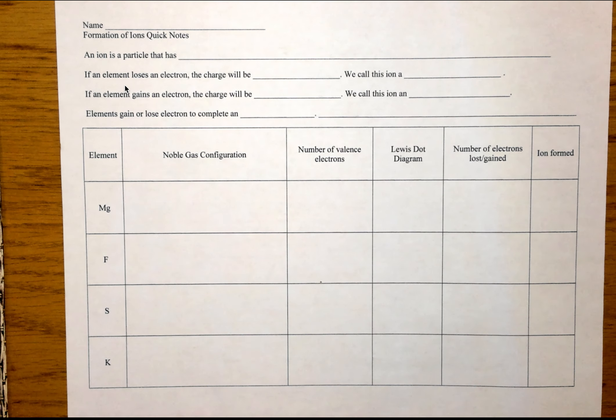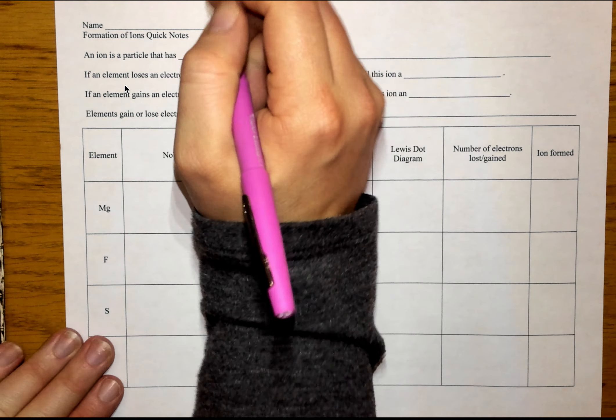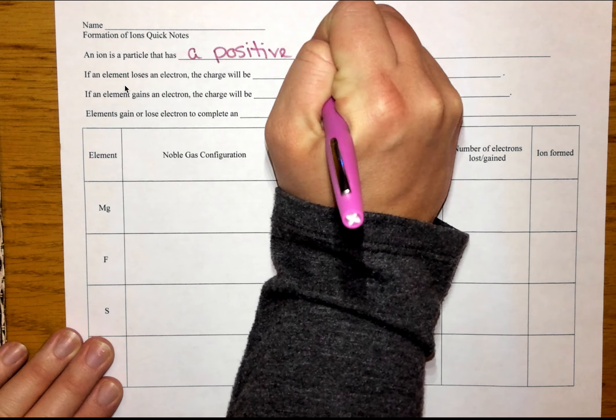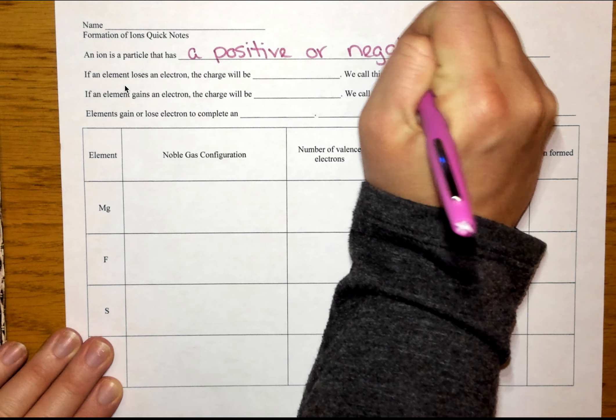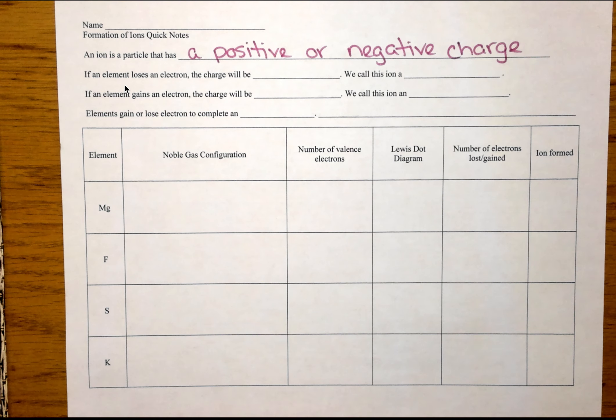Today we're going to be looking at how ions form, and I guess more importantly let's start with what is an ion. So an ion is a particle that has a positive or negative charge.